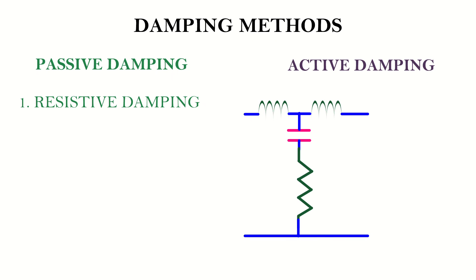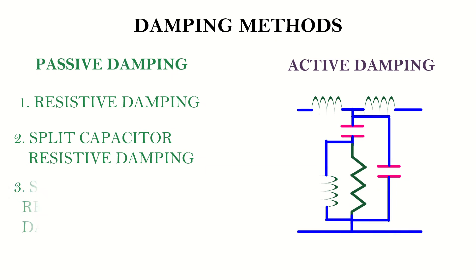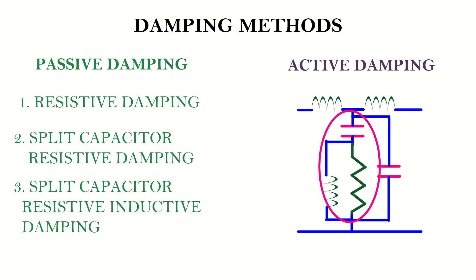The first one is a purely resistive damping scheme, involving the connection of a resistor in series with the capacitor. The second is the split capacitor resistive damping scheme, where an RC network is connected across the filter capacitor. The third method is the split capacitor resistive inductive damping, where an RLC network is connected across the capacitor.